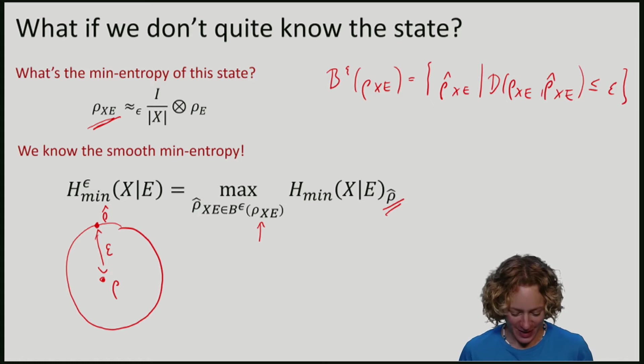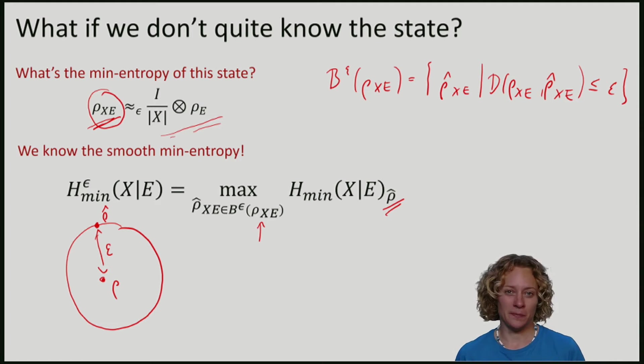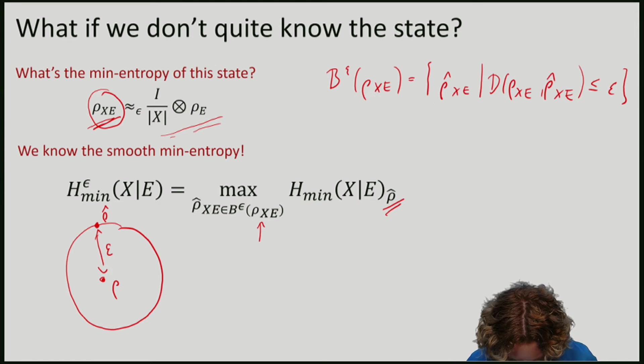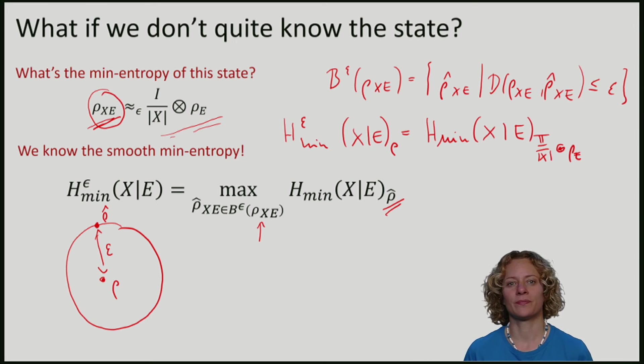For our example here, note that I know that in the epsilon ball of my state, there is this state of maximum entropy. This means that if I compute the smooth min-entropy of this particular state, the min-entropy of the state that is maximally mixed on x and uncorrelated from e.